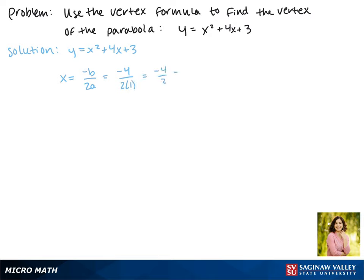This makes it negative 4 divided by 2 which is negative 2, so we know the x coordinate of our vertex is negative 2.